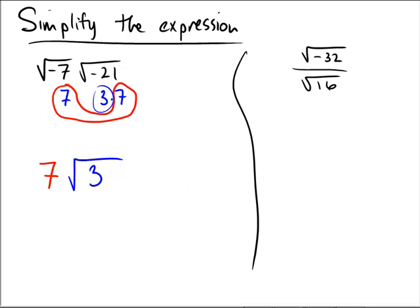Now, because of the negative signs, we define the square root of negative 1 to be equal to a number we call i. So notice that there are two negatives, one here and one here. So that means we are going to have two copies of i.